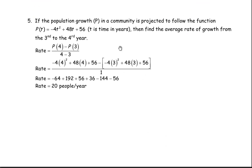Question number 5: if the population P in a community follows a given function where t is time in years, we're asked to find the average rate of growth from the third to the fourth year. This is a slope calculation, like y2 minus y1 over x2 minus x1. We find the population in the fourth year and subtract the population in the third year, over 4 minus 3 equals 1. For P(4): negative 4 times 4 squared plus 48 times 4 plus 56. Minus P(3) in square brackets: negative 4 times 3 squared plus 48 times 3 plus 56.